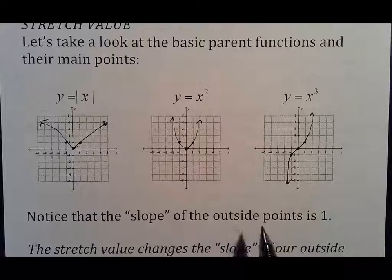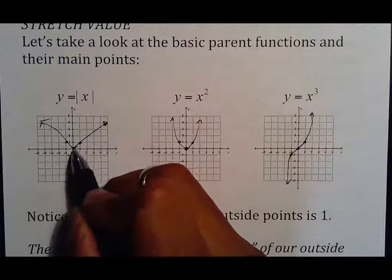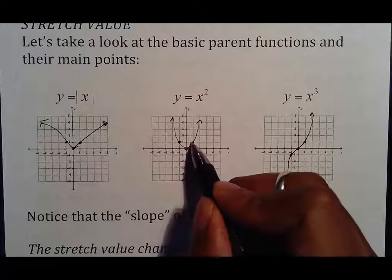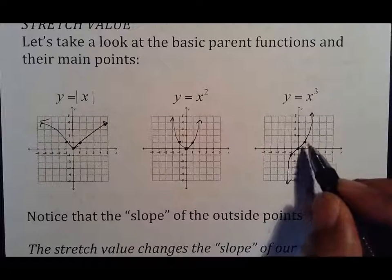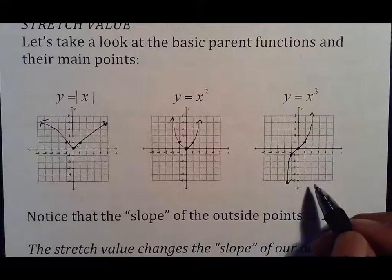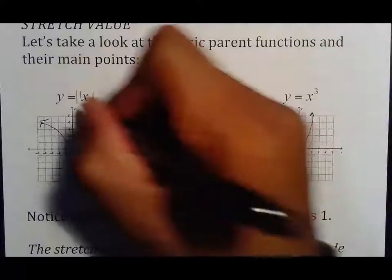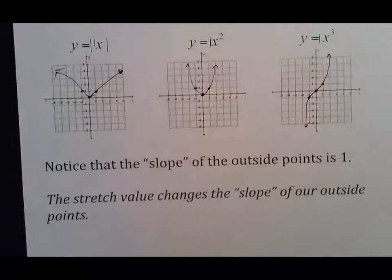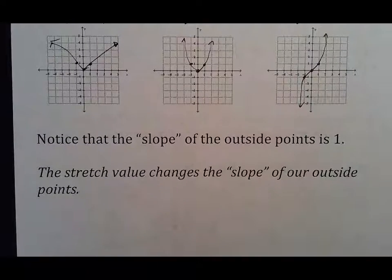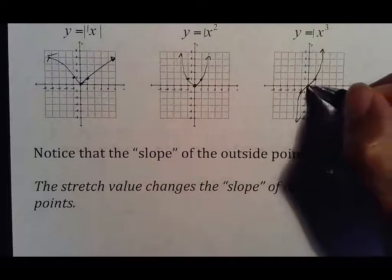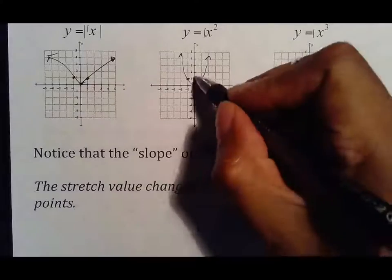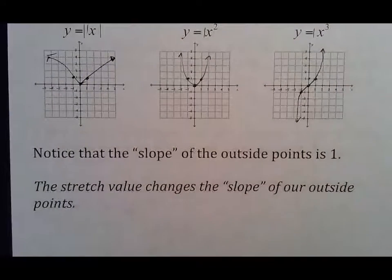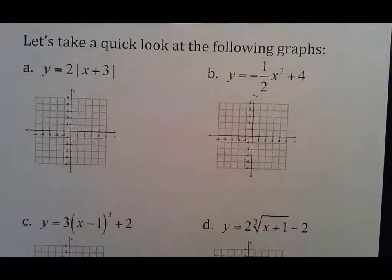Notice that the slope of the outside points is one, so over one, up one, back one, up one. So one is your slope, and one is also the invisible coefficient for what's going on. What your stretch value does is it changes the slope of your outside points. We should say rise over run, so one up and one over, but the general idea is the stretch value, the number attached to your x, changes the location of that second point.